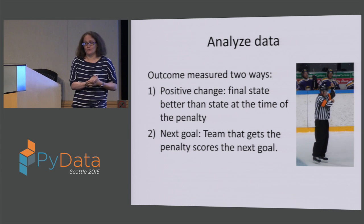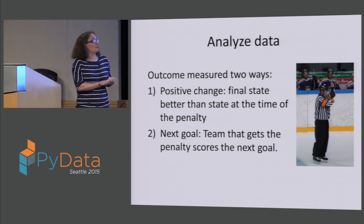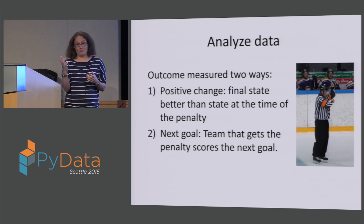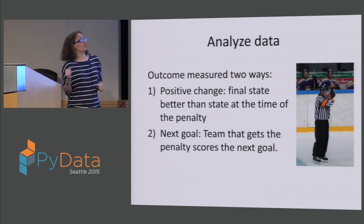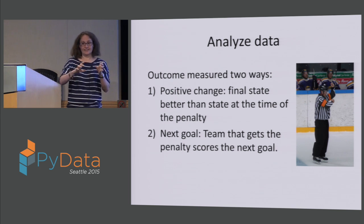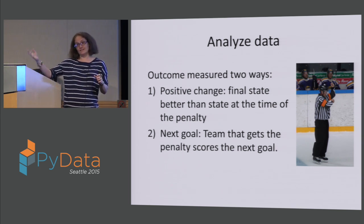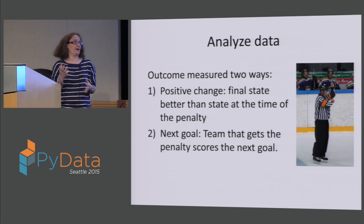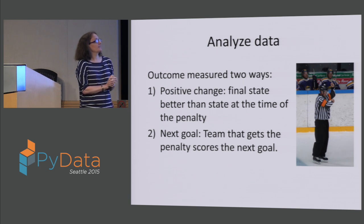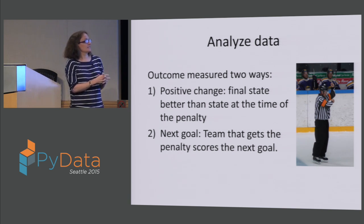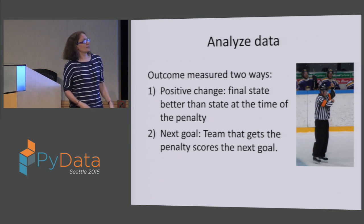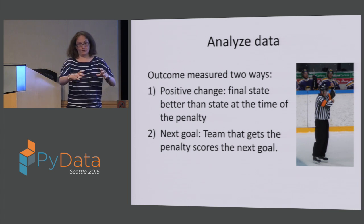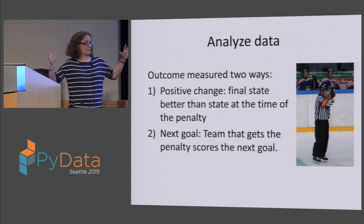I measured the outcome in two ways. First, I looked for a positive change in the game following the penalty — where the final state of the game is better than the state when the team took the penalty. So if they're tied when the penalty happens but then they win, or if they're losing and then they tie or win, those would be positive changes. The second outcome I looked at was next goal — whether the team that gets the penalty also scores the next goal. These two outcomes get at whether any effect is very localized to around the penalty or systemic to the whole rest of the game.